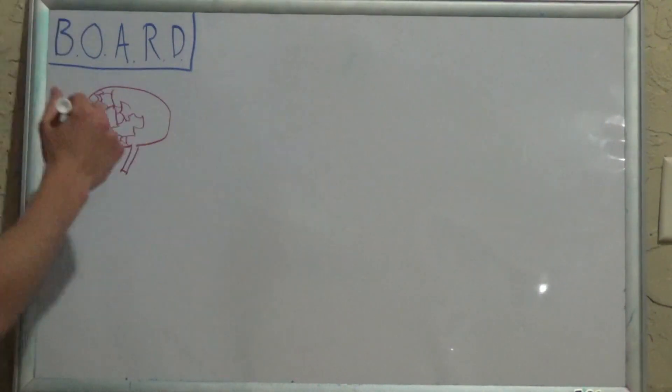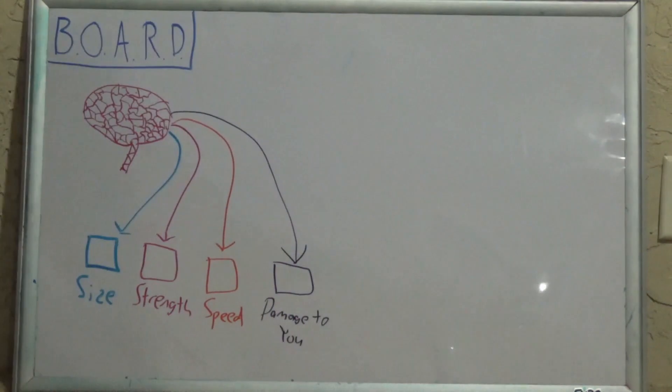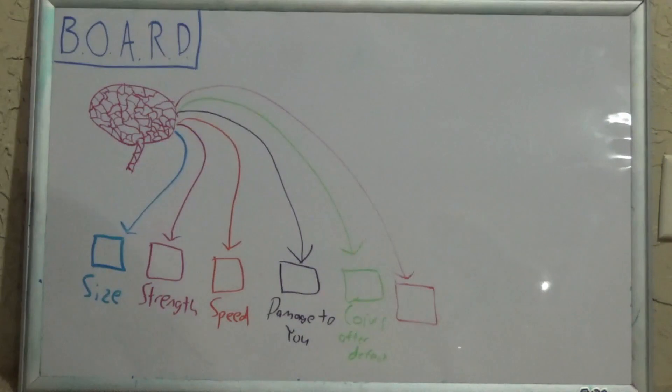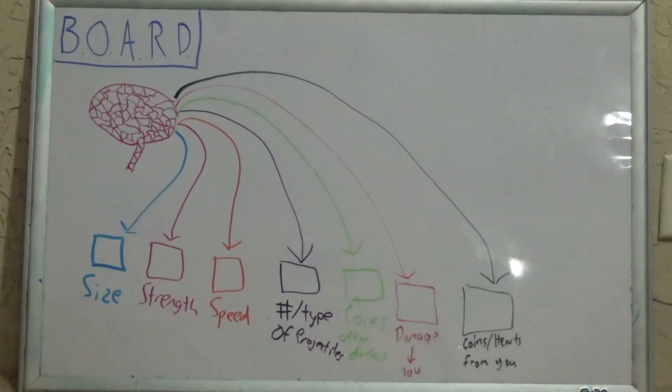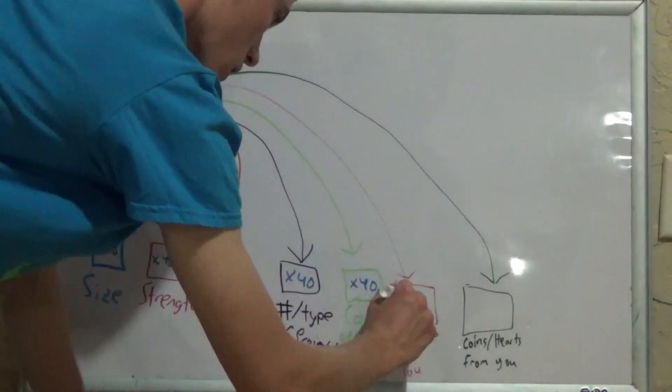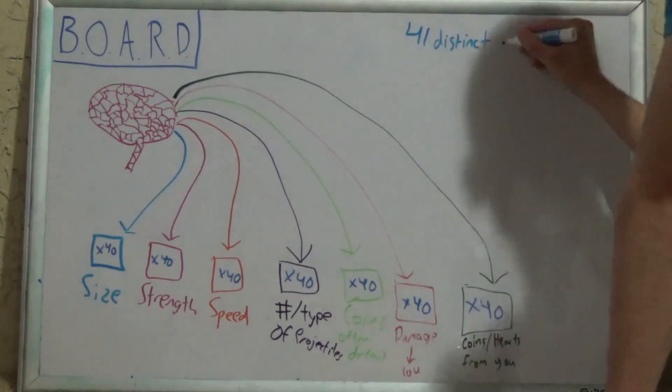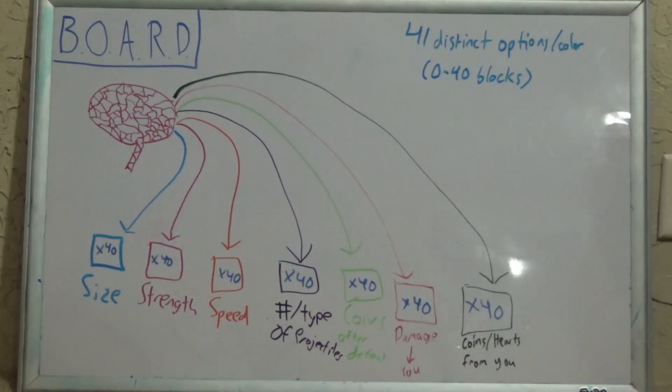Back to Bloxels. With brains, you can affect the enemy's size, strength, speed, number or type of projectiles, coins given after defeat, damage given to you, and coins or hearts taken from you. These are represented by blue, pink, orange, purple, yellow, red, and green blocks, respectively. The game board comes with 40 blocks of each color, providing us with a maximum number of blocks for each color. All these enemy traits, controlled by the enemy's brain, increase in power every time you add a block, meaning that there are 41 options yielding different results for every color. 1 to 40 blocks, or no blocks at all.